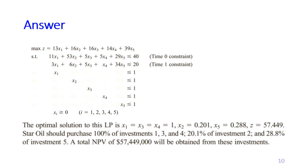The optimal solution says that for investments one, three, and four, we purchase 100% — the whole investment. But for x2 and x5, we only purchase a fraction: 0.201 of investment two, and 0.288 of investment five, such that our total NPV from this optimal decision is $57.449 million. That's the end of this section — see you in the next one. Thank you.